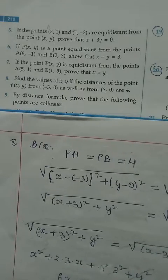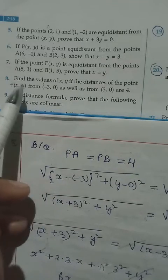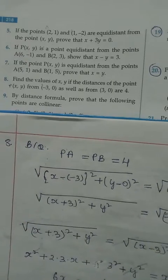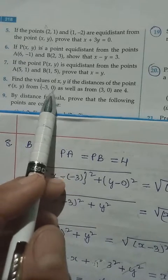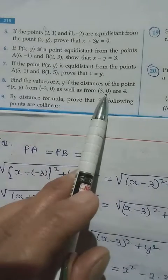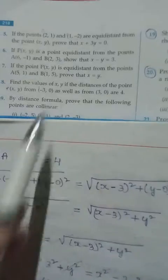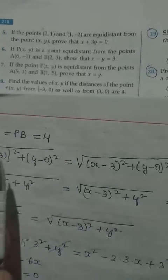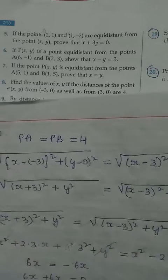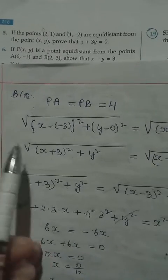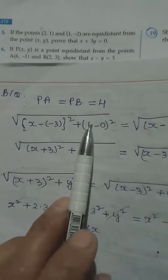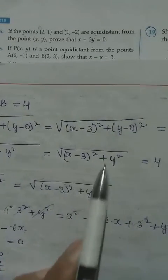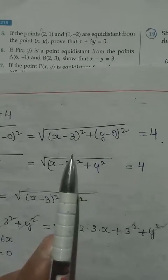Naming the point P with coordinates (a, b). From the question, PA equals PB and both equal 4. Applying the distance formula for PA: P is (x, y), A is (-3, 0), so we get x minus (-3) which is x plus 3, whole square plus y minus 0, which is y, whole square. For PB: P is (x, y), B is (3, 0), giving x minus 3 whole square plus y minus 0, which simplifies to x minus 3 whole square plus y squared, all equal to 4.